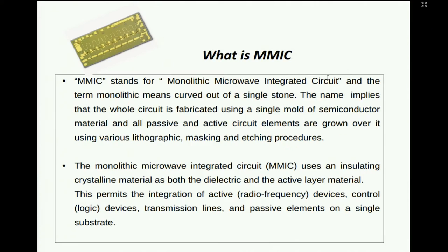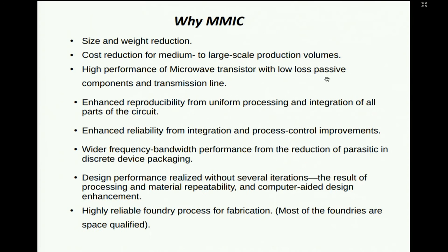MMIC offers high performance with low-loss passive components and transmission lines. A microwave integrated circuit is about 15mm by 10mm in size, whereas an MMIC is about 1mm by 2–2.5mm. As components go down in size, the associated parasitics also go down, so we end up with components which behave more or less as we want them to, rather than in unintended ways seen in discrete designs. Enhanced reproducibility comes from uniform processing and integration of all circuit parts.